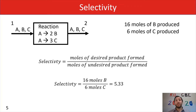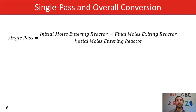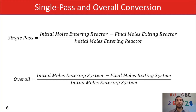Now we're going to move on to single pass and overall conversion. For single pass conversion, it's the initial moles entering a reactor minus the final moles exiting the reactor divided by the initial moles entering the reactor. For overall conversion, it's the initial moles entering our system minus the final moles exiting our system divided by the initial moles entering our system. It sounds similar, but in a multi-unit process there can be a difference between the amount of material entering the reactor versus entering the entire system, as well as exiting the reactor versus exiting the entire system.